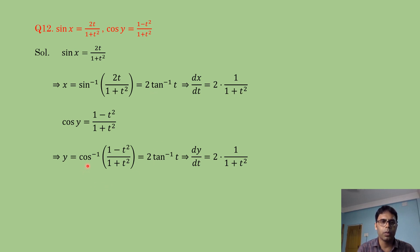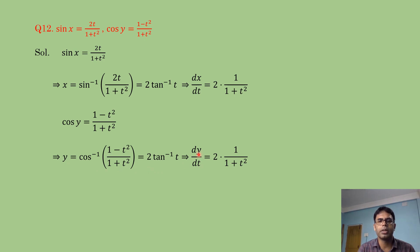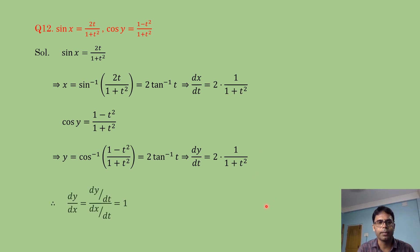Therefore dy/dt = 2 × 1/(1+t²) as well. Both dx/dt and dy/dt equal 2/(1+t²), so dy/dx = dy/dt ÷ dx/dt = 1. That is the solution for question 12.